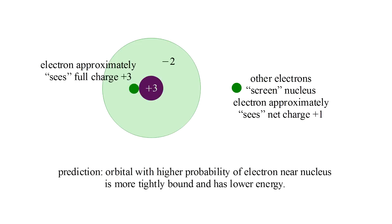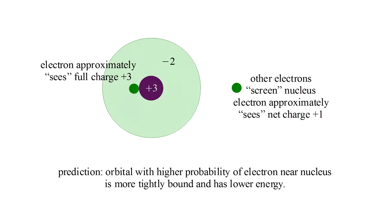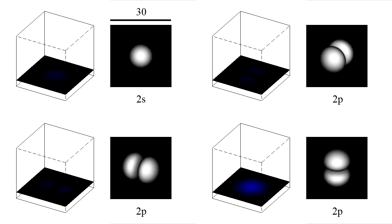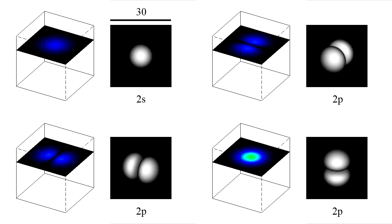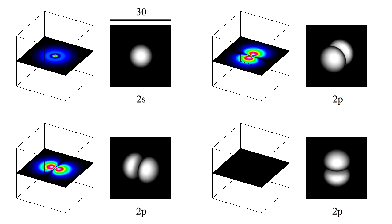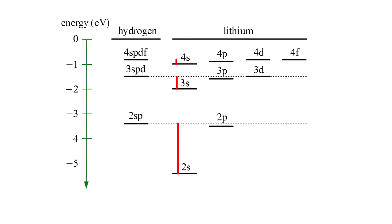This leads us to predict that an orbital with a higher probability of the electron being near the nucleus is more tightly bound than it would be in a hydrogen atom. That is, it has a lower energy. The 2s and 2p orbitals have very different behavior near the nucleus. The 2s orbital has its largest probability density at the nucleus, while the 2p orbitals have essentially zero probability there. So we would expect the 2s orbital in lithium to have a lower energy than the 2p orbitals. And that is indeed what we observe.